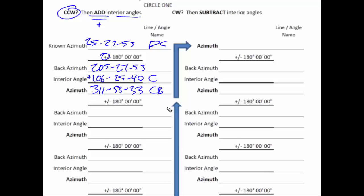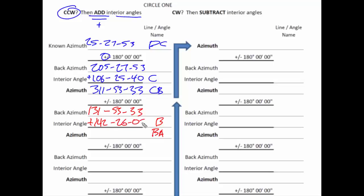So let's proceed. If that's the direction CB, we next apply angle B. First we find the back azimuth, which works out to be 131 53 33. Our interior angle is 142 26 05, and since we're adding, our azimuth for BA works out to be 274 19 38.